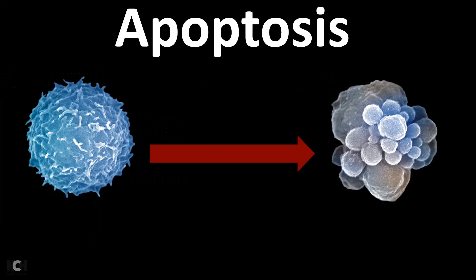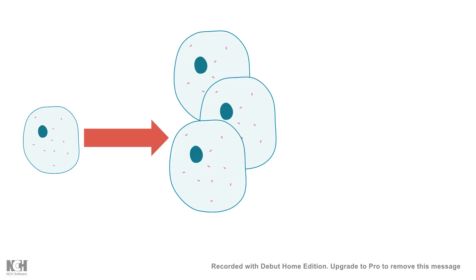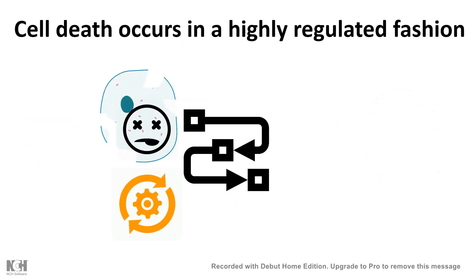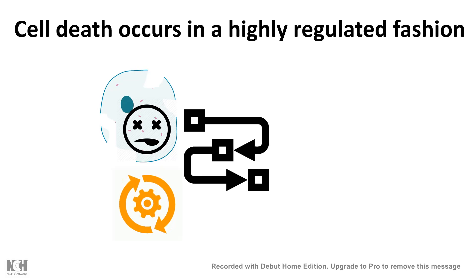In this video I'll talk about apoptosis, or programmed cell death. Cells need to grow, divide, and form more cells to support the growth of an organism. But not only the birth and growth of the cell is important — the death of the cell is also very important. Cell death occurs in a highly regulated, stepwise fashion; it is not a haphazard process. The process by which these regulated events lead to cellular death is known as apoptosis.